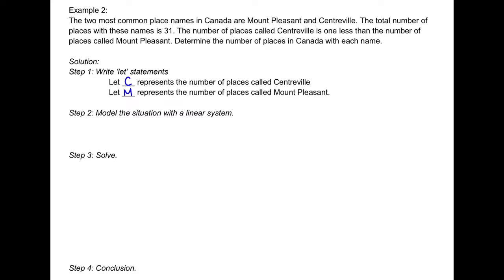Reading the question to find our equations: the total number of places with those names is 31, which means C plus M equals 31.